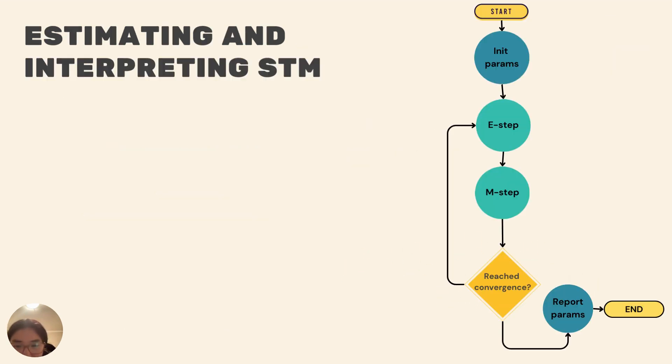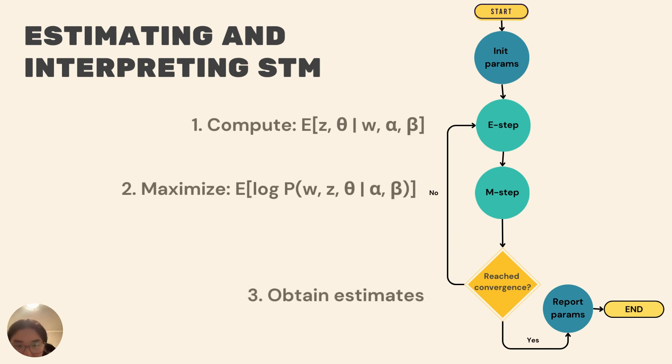Now let's discuss the process of estimating and interpreting the STM model, which involves the variational EM algorithm. This iterative algorithm consists of two main steps. In the E-step, we compute the expected values of the hidden variables, which are the topic assignments for each word in the document given the current estimates of the model parameters.